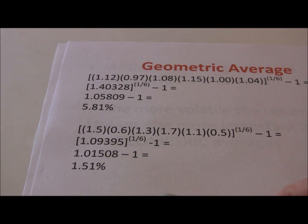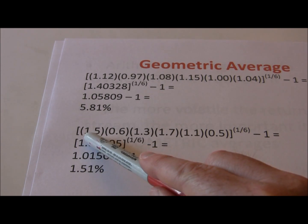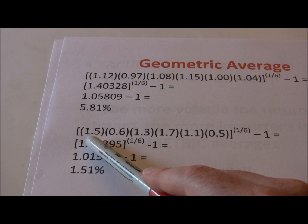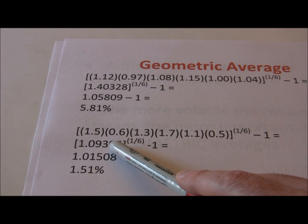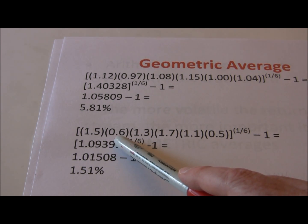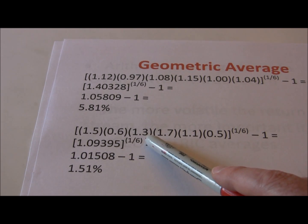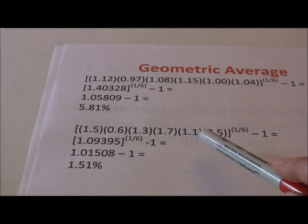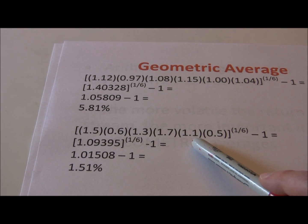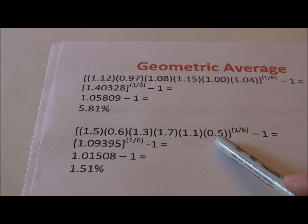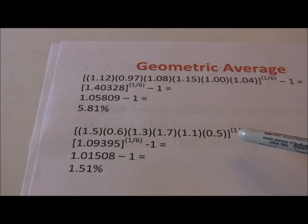Let's do the same thing for investment B. 1.5 because the first year we had a 50% return. Year 2 we had a negative 40% return, which gives us 1 minus .4 or .6. 30% return in year 3, 70% return in year 4, 10% return in year 5, and a negative 50% return in year 6. Again we take it to the 1/6 power.